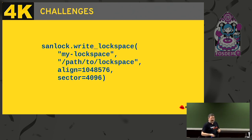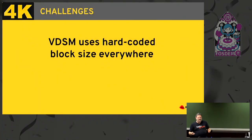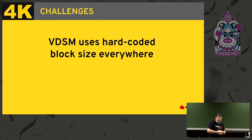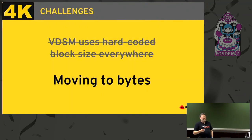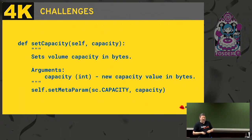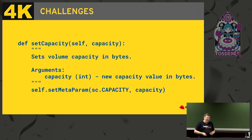But we're still not ready, because VDSM used hardcoded block sizes everywhere — in many places the value 512 bytes was hardcoded because it wasn't important to make it configurable in the past. We solved this by moving to bytes. Now all VDSM APIs and the metadata that VDSM writes use bytes. We don't store or process sector size anywhere. For example, an internal API that used to work in hardcoded sectors now gets capacity in bytes and saves capacity to metadata with a new key. This is part of storage format V5.